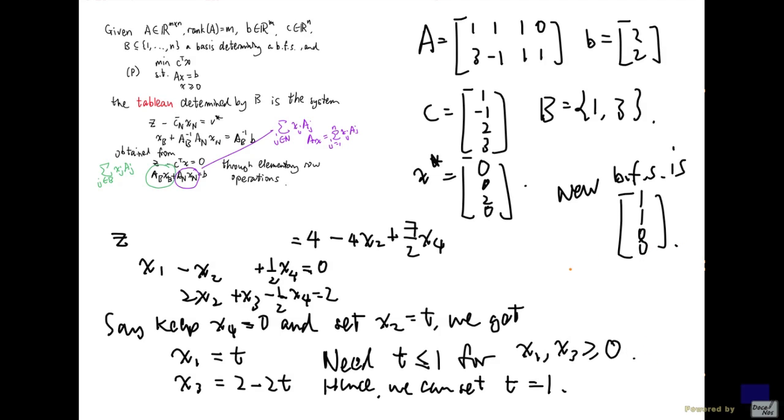Now this solution is actually optimal because, well, first of all the basis is 1, 2. And the dual solution that it determines,